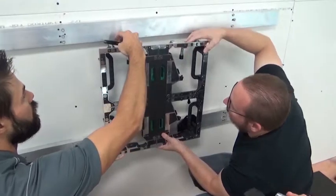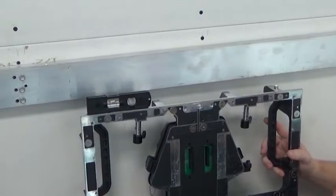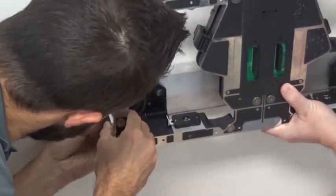To mount the first panel, start by removing the modules from the panel. Position the panel in the center of the bottom row so the bottom is flush with the bottom tube and doesn't hang below the bottom of the tube by more than a quarter inch.